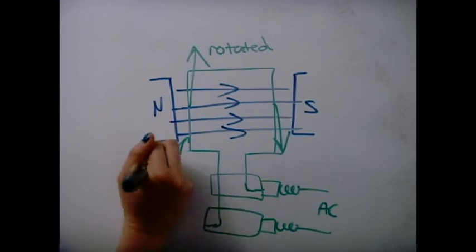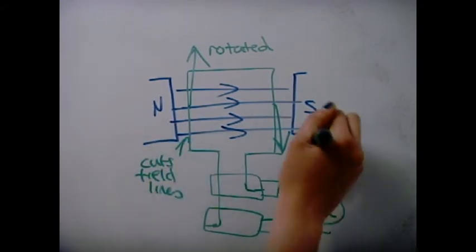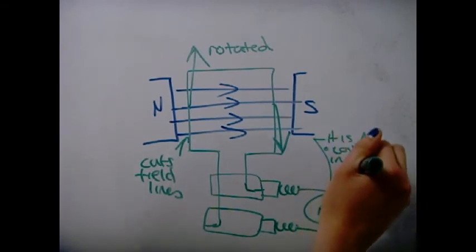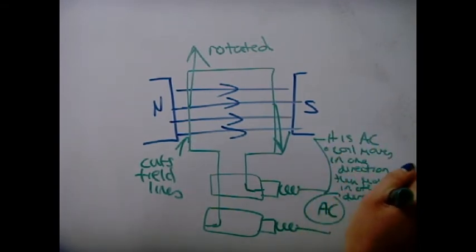Generators: The coil in the middle is rotated. This cuts the magnetic field lines, producing a voltage and a current. It is AC since the coil moves in one direction and then in the other.